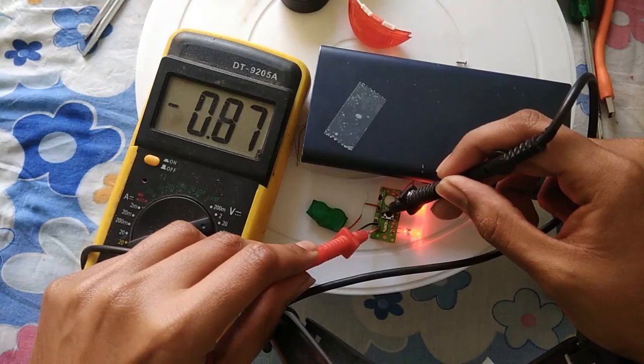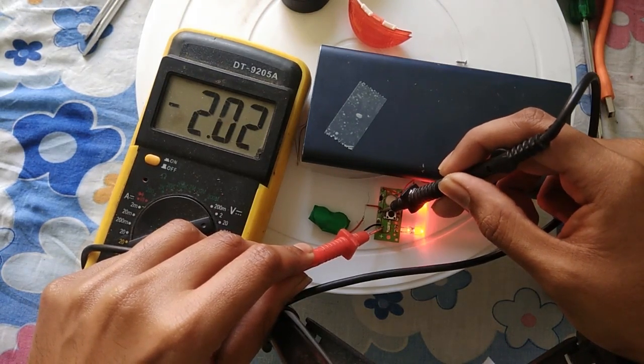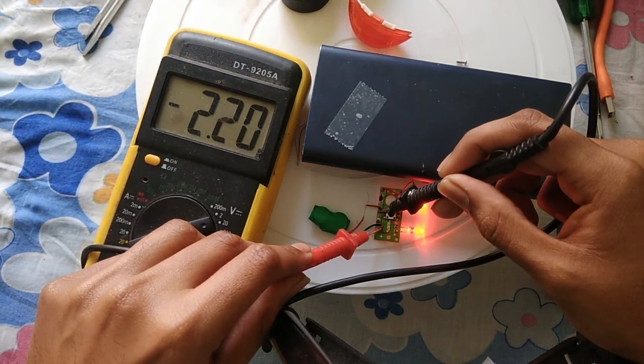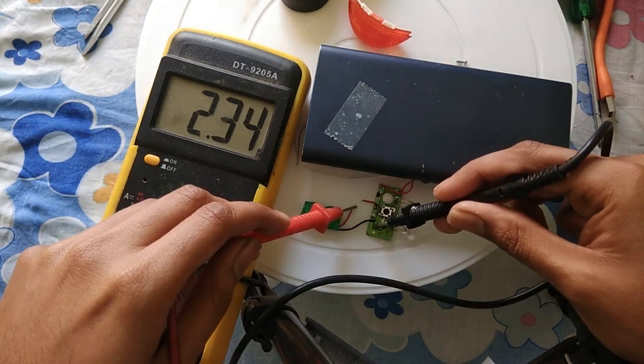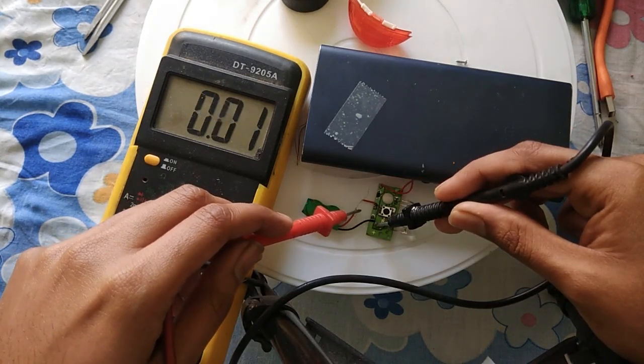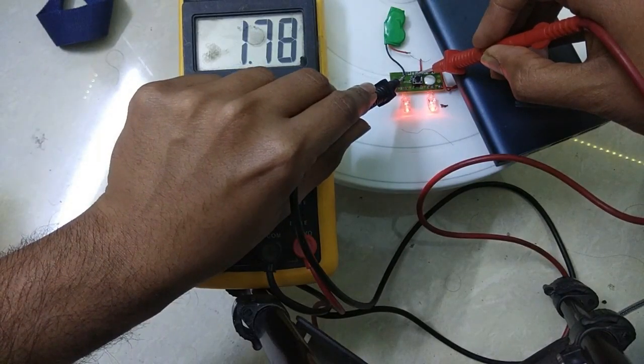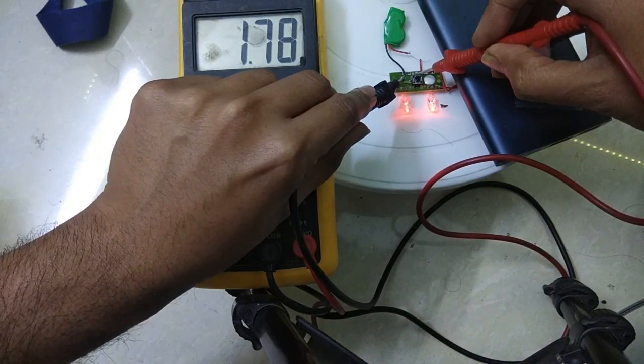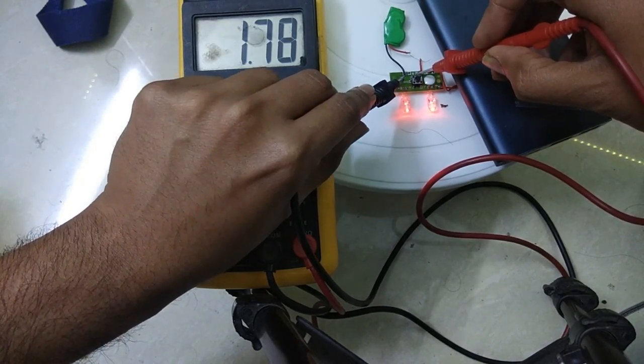So before discharging, the voltage of the battery was 2.22 on load when the LED is on and around 2.34 volts when the LED is off. After discharging the battery for 4 hours, voltage across the battery is 1.78 volt when the LED is on and 2.16 volt when the LED is off.